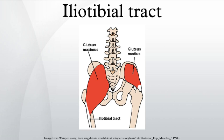Other risk factors for ITBS include gait abnormalities such as overpronation, leg length discrepancies, or bow-leggedness. ITB syndrome is an overuse condition of the distal ITB near the lateral femoral condyle and at Gerdy's tubercle. The most vulnerable range of knee flexion for this condition is at 30 to 40 degrees, where the ITB crosses the lateral femoral epicondyle.